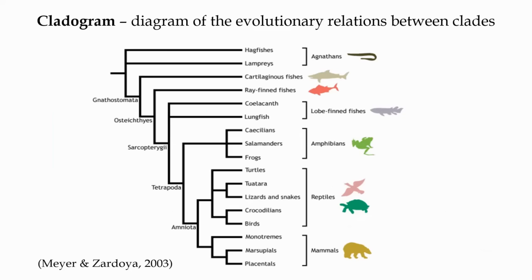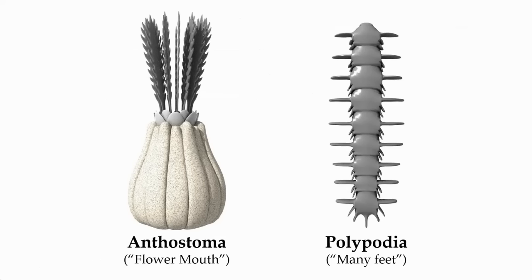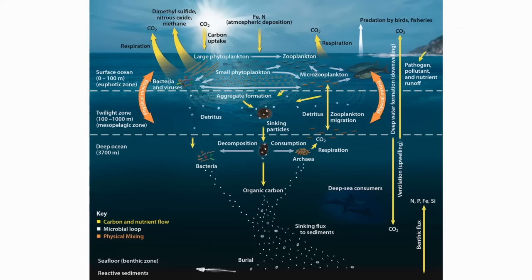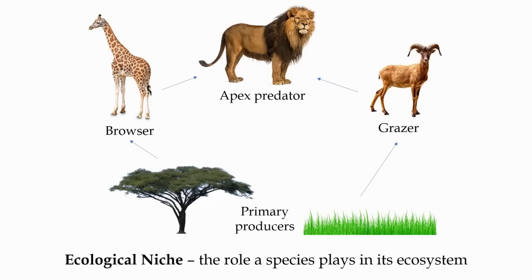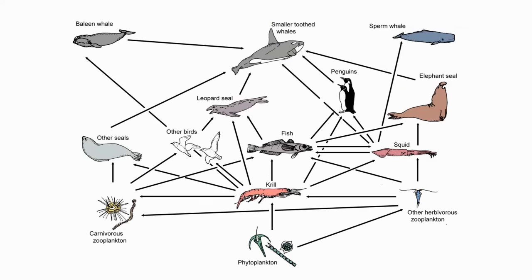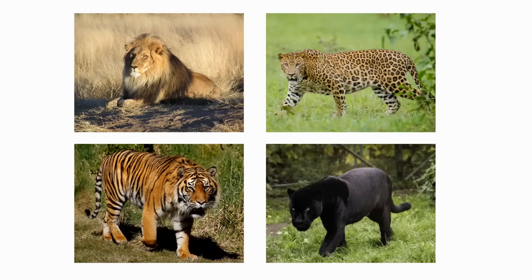The next step in creating our alien biosphere is to construct some cladograms for our two body plans, and to do that, we need to have them undergo diversification into different clades. This diversification is likely to be driven by adaptation to different modes of life, or more specifically, to different niches. An ecological niche is essentially the role a given species plays in its ecosystem. The precise definition is multifaceted and may take into account the species' habitat, feeding, reproduction, and its relationship to other species. Clades will often specialize for a group of related niches, such as how the big cats have occupied the niches of large predators.